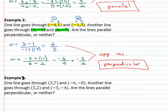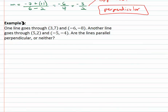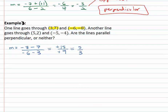Let's try one more example. The first line goes through (3, 7) and (−6, −8). Slope = y₂ = −8 minus y₁ = 7 over x₂ = −6 minus x₁ = 3. Negative eight minus seven is negative fifteen; negative six minus three is negative nine. Two negatives make a positive, and reducing by dividing by three gives a slope of five-thirds.